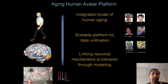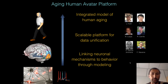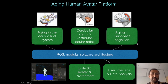Here we try to do the first step in this direction by creating a software model of a human moving in its 3D environment. Here are the people who contributed to this work. The architecture of the Aging Human Avatar platform includes a low-level communicating backbone called ROS, which is middleware connecting different components. These components are either interface modules, shown below, or functional modules, shown on top.